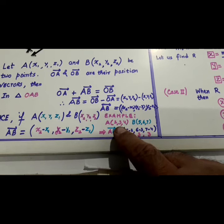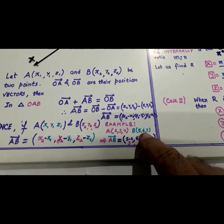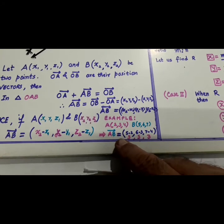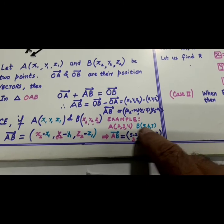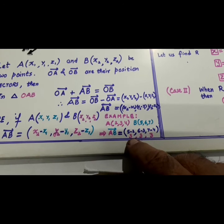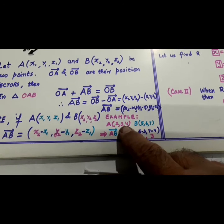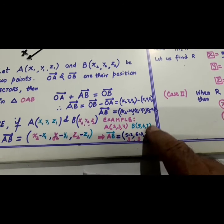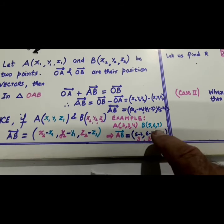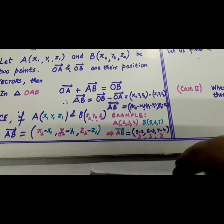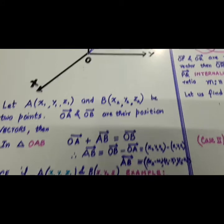Example is there, if A is 2, 3, 4, B is 5, 6, 7, what will be AB? B minus A. That is, 5 minus 2, that is 3, 6 minus 3 is again 3, 7 minus 4 is 3. So, AB is equal to OB minus OA.